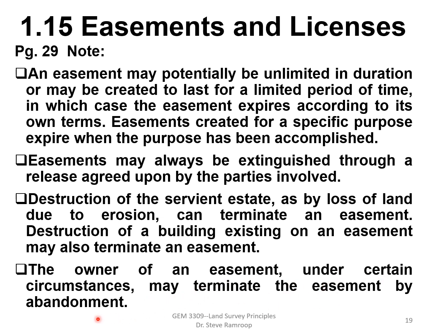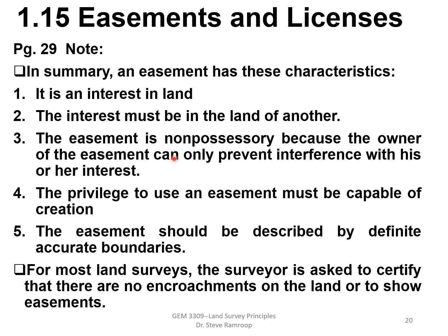The owner of an easement may also terminate it by abandonment. Please learn the various ways an easement can be nullified or terminated. In summary, an easement has these characteristics: it is an interest in the land of another; the easement is non-possessory because the owner can only prevent interference with their interests; the privilege to use an easement must be capable of creation; and the easement should be described by definite, accurate boundaries.